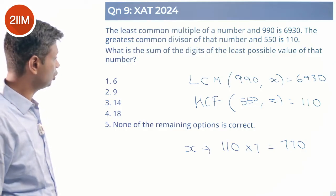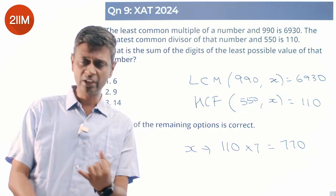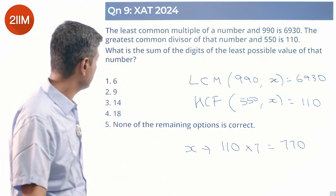The least possible value of that number is 770. X has to be a multiple of 110 and 7. The smallest number that satisfies this is 770. 7 plus 7 plus 0 is 14.